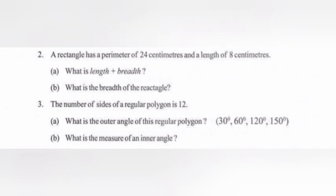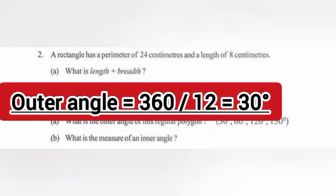3. The number of sides of a regular polygon is 12. A. What is the outer angle of this regular polygon? Options: 30 degrees, 60 degrees, 120 degrees, 150 degrees. Answer: Outer angle equals 360 divided by 12 equals 30 degrees.